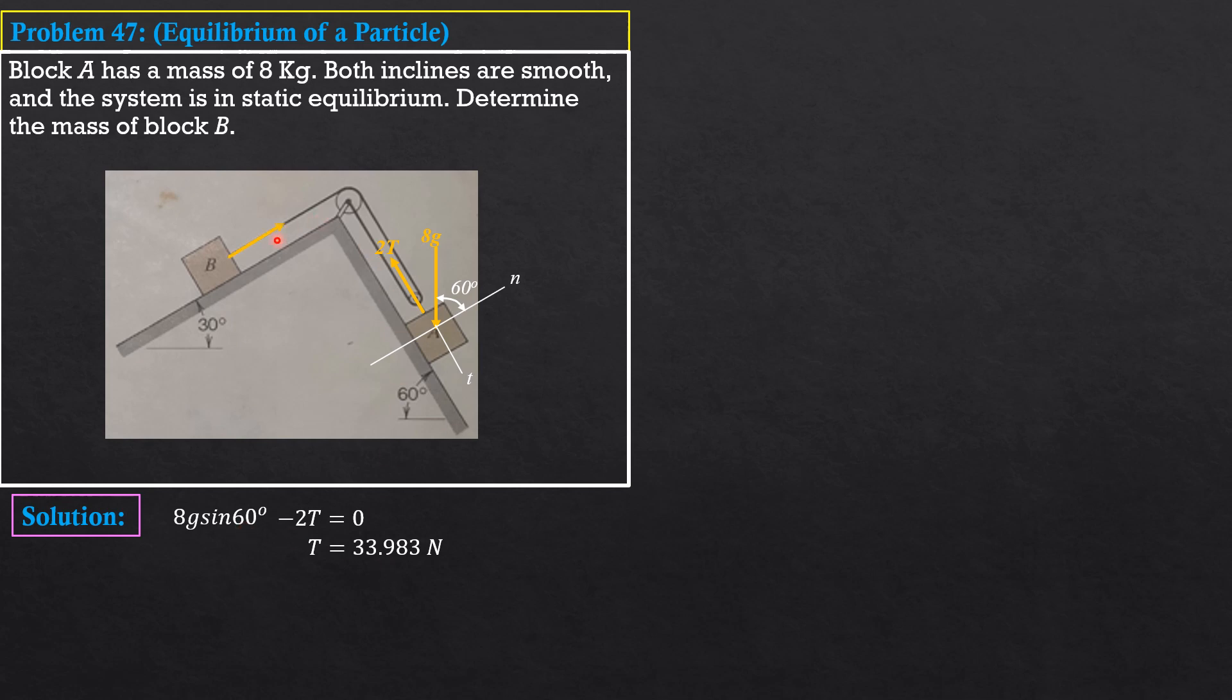Let's draw the free body diagram of block B. So, we have weight MB times G, then the normal and the tangential axis. This angle is 30 degrees. This angle is 30 degrees, which is this angle of inclination, the angle between the vertical and the normal axis, as shown in the figure 30 degrees. So, summation forces tangential equals 0. The tangential component of MBG is this component here. And it is equal to MBG times sine 30.